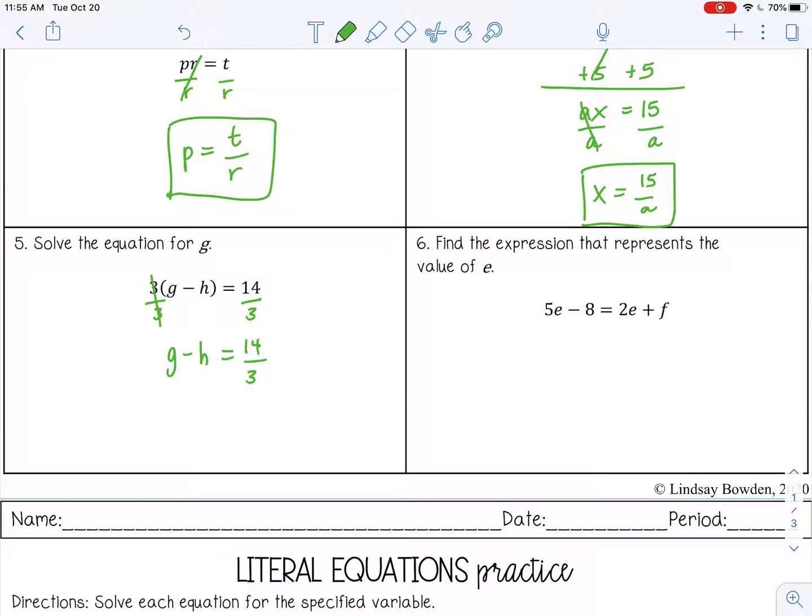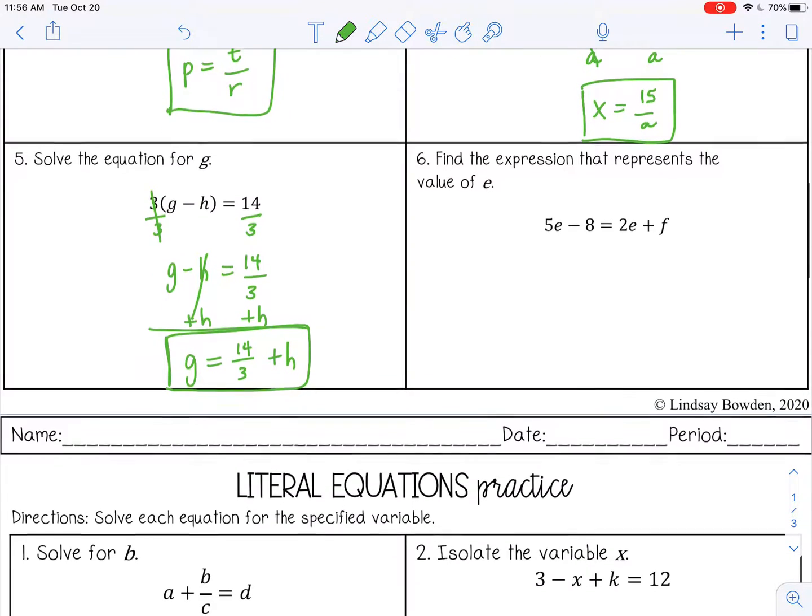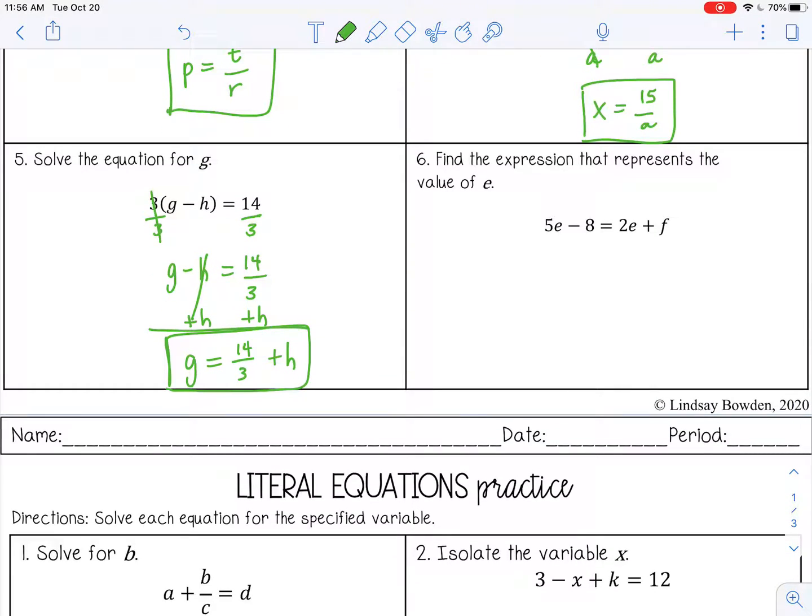Next, I still want to isolate g, so I'm going to add h to both sides. Those are not like terms, so my final answer would be 14 thirds plus h. Looks weird, I know, but that's as simple as you can make it.